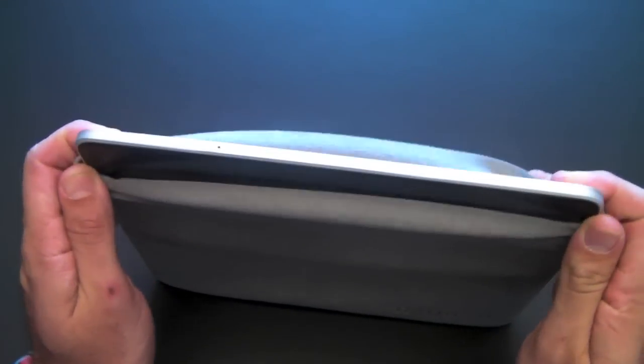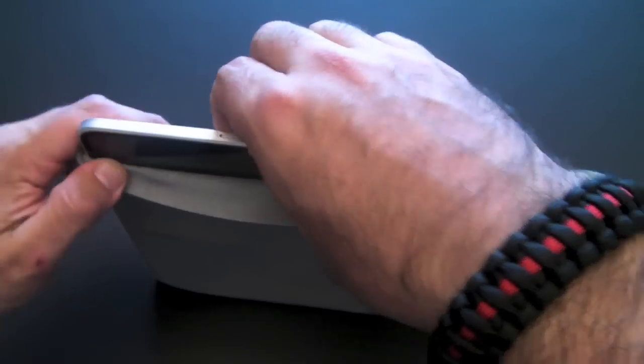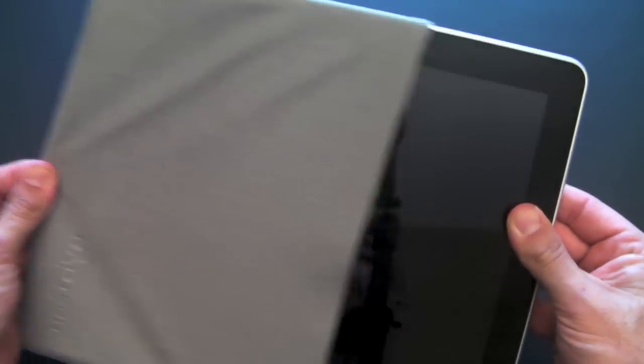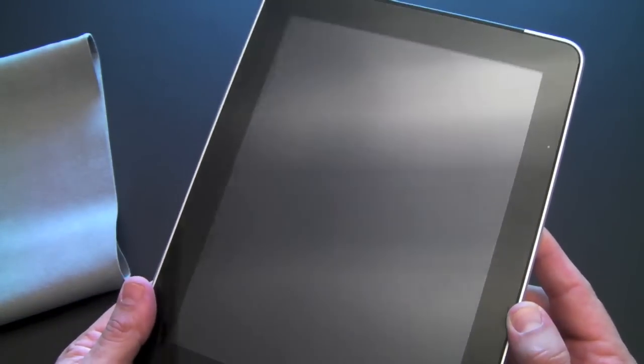Once you're ready to get it out, you do kind of have to slide it down on the sides first to get a purchase point. But once you do that, it kind of just removes from the bottom and you slide it out no problem. Look at that. Look how clean my screen is, guys.